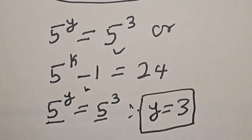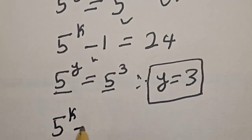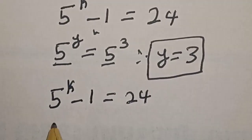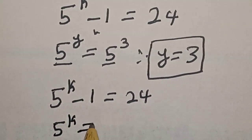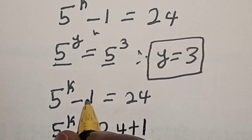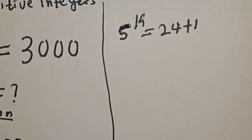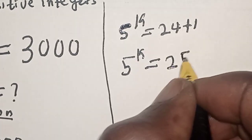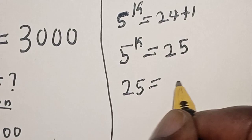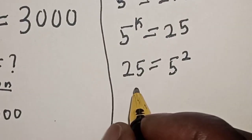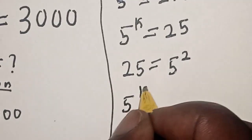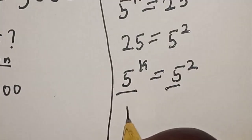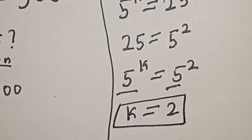Now, also from the second case, we have 5 raised to power k minus 1 is equal to 24. Let's collect like terms: 5 raised to power k is equal to 24 plus 1, because the minus crosses to the other side and becomes plus. Then we have 5 raised to power k is equal to 25. And 25 is equal to 5 squared. Then 5 raised to power k equals 5 squared. They have the same base, therefore k is equal to 2.